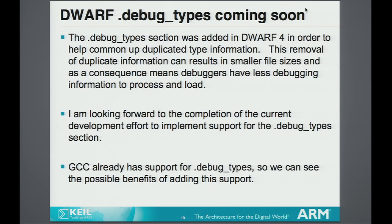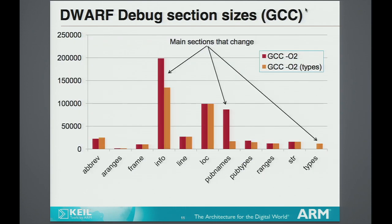The one that's interesting and coming soon is the debug types section. Here's GCC compiled with and without the generation of the debug types, and you can see a dramatic decrease in the size of the debug info and in the pub names section, just from generating a small type section at the end. I believe it's in LTO and hopefully more generally available soon.